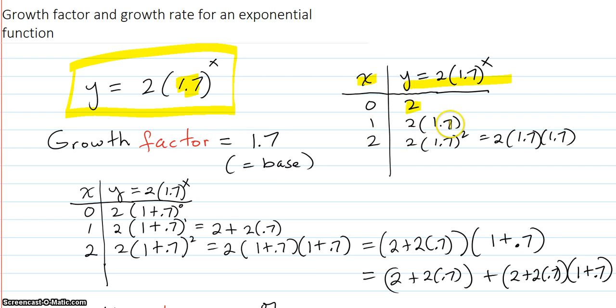At 1, you get one factor of 1.7 hitting on the 2 to get you the next value. When it's 2, you get two of these 1.7s to hit on the original 2 to get to the new value. Every next value is 1.7 times the previous. It's going up by a factor of 1.7. The growth factor is 1.7 and that's always the same as the base.